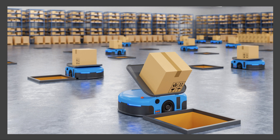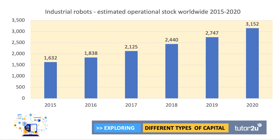Amazon needs robotic systems to supercharge the order fulfilment process, making it more efficient particularly as they try to move to same-day delivery, for which people are prepared to pay a premium price. Globally, the operational stock of industrial robots is expected to rise from 1.6 million in 2015 to around 3.2 million by 2020, and this figure will grow even more quickly in the years to come.